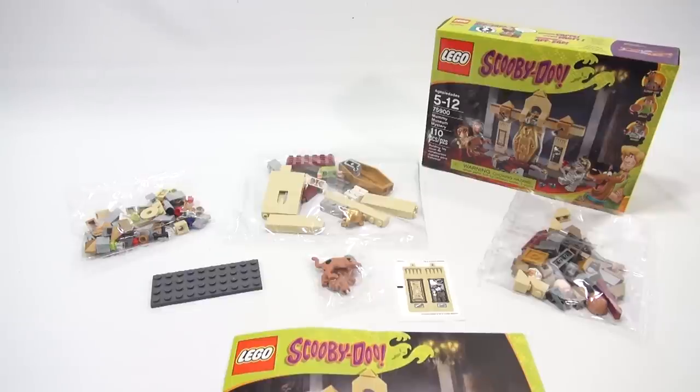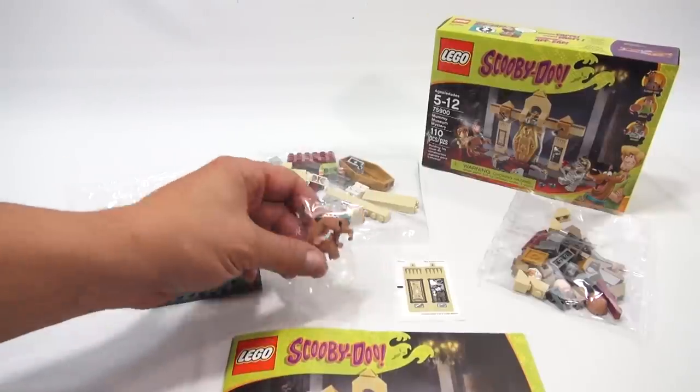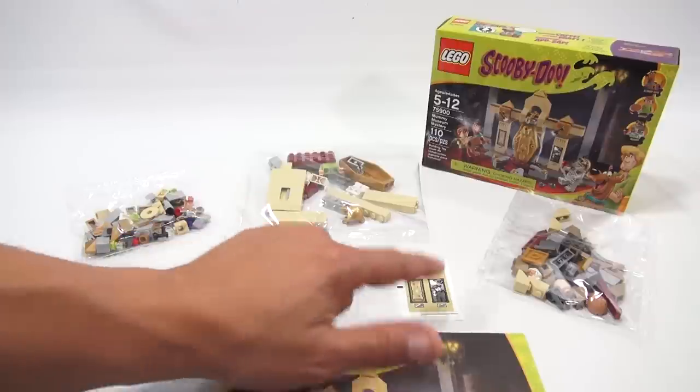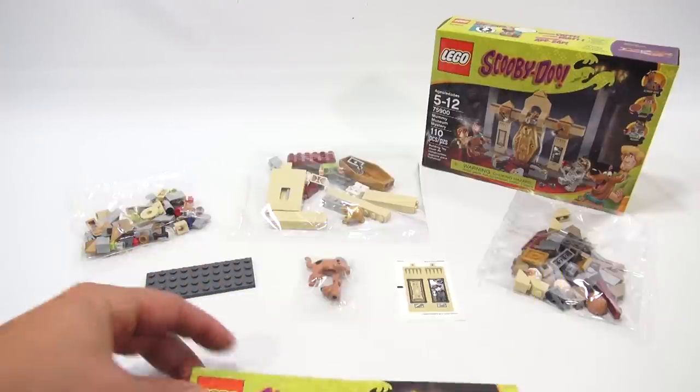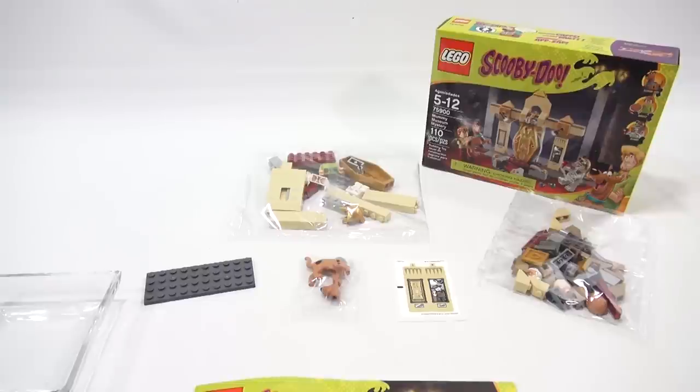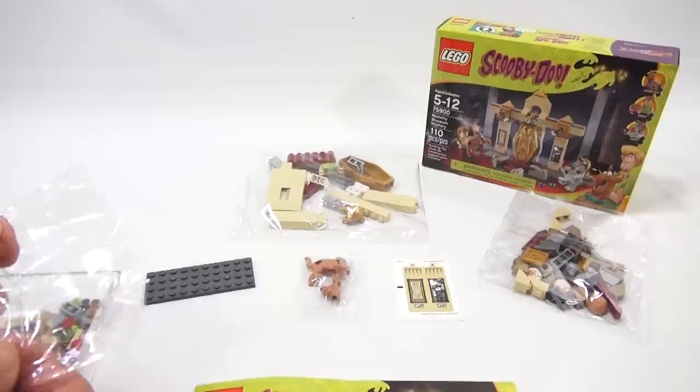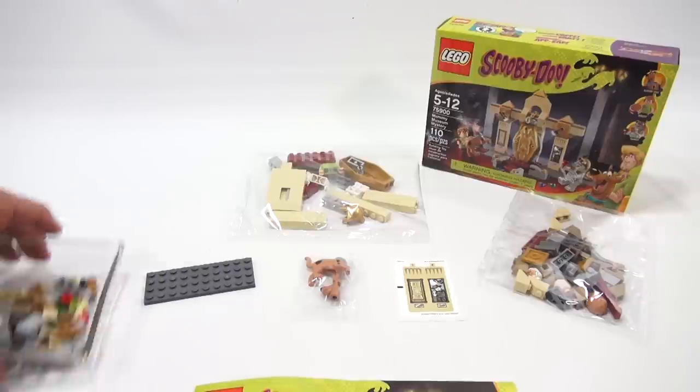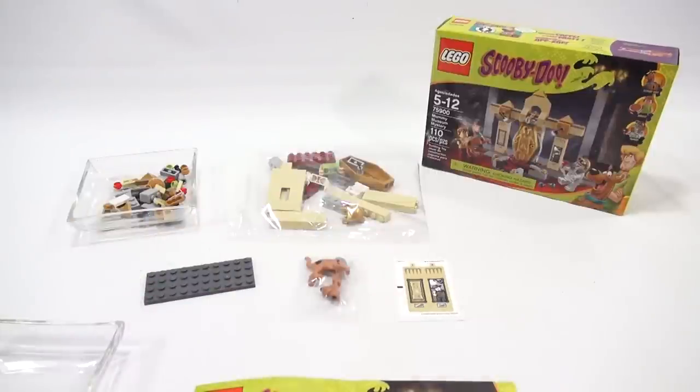Alright, so here is how it came out of the box. There's three main bags. There's Scooby here. He needs to have his own little bag. A little sticker sheet, this gray flat piece, and then the Scooby-Doo instructions. So I like to get some small containers before I cut everything open and dump it on a table. I like to put them in little bowls.